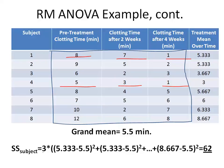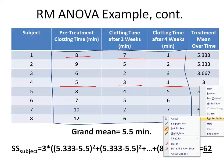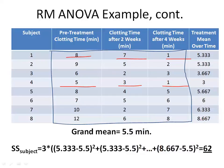The sum of squares subject is A — which is 3 in this case, since there are three time points: pretreatment, two weeks, and four weeks — multiplied by the sum of squared differences between each subject's mean and the grand mean of 5.5. For instance, 5.33 minus 5.5 squared, and so on for all eight subjects. When you sum all of that together, you get a value of 62, and the associated degrees of freedom are n minus 1, which is 8 minus 1, equal to 7.